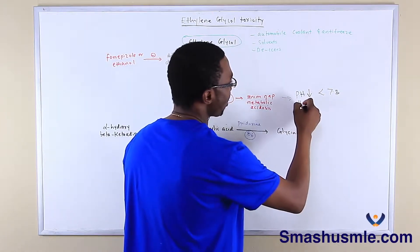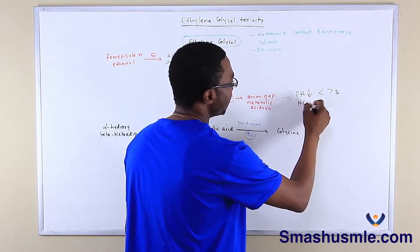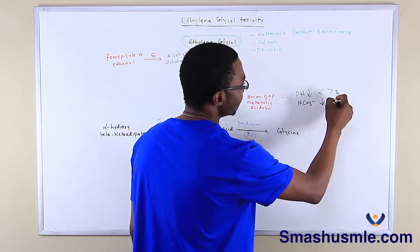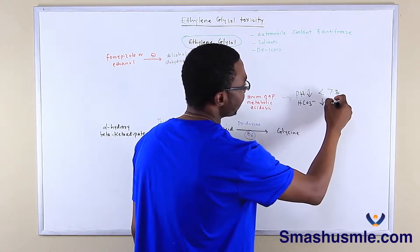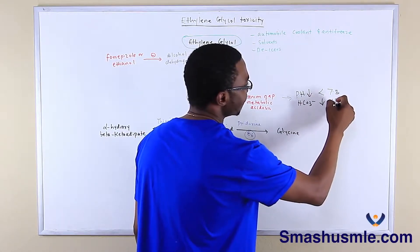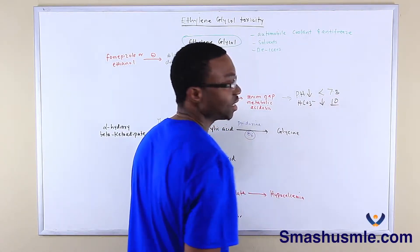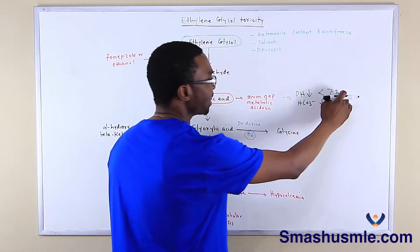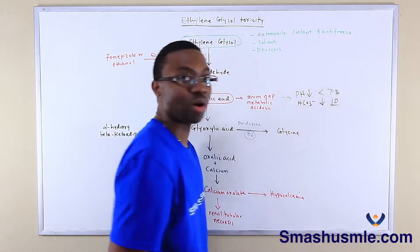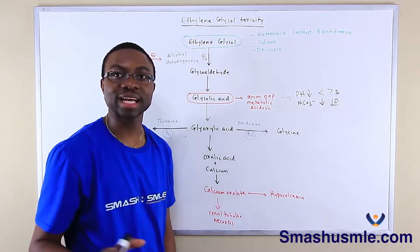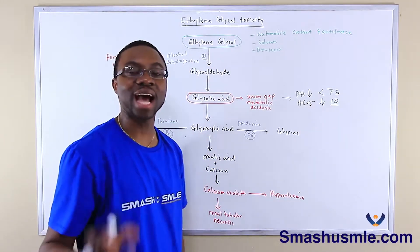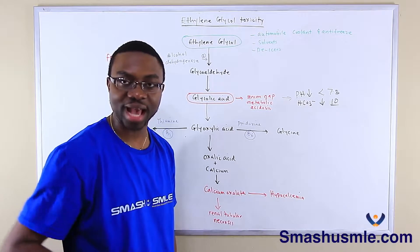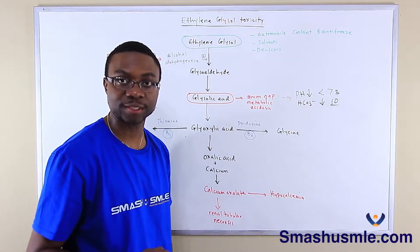Also, their bicarb is going to be low — less than 24; in this case let's say it's 10. So they have metabolic acidosis, and they're going to have an anion gap metabolic acidosis.